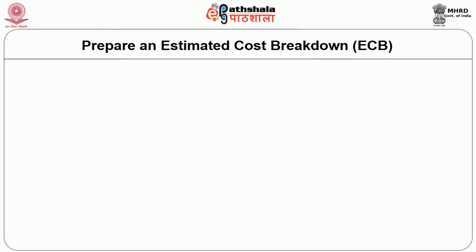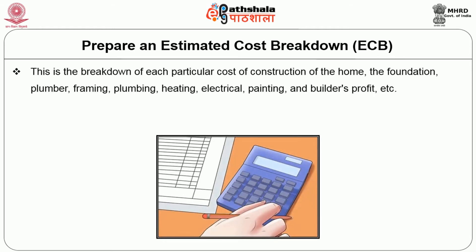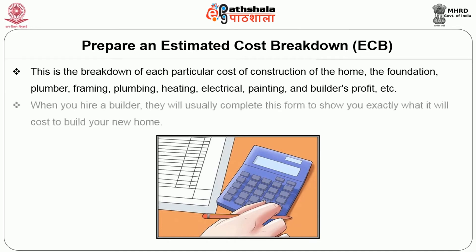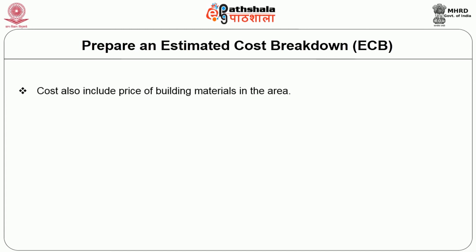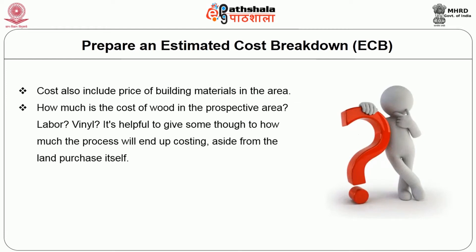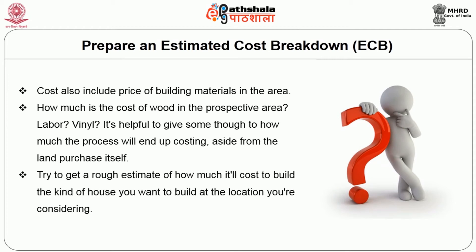Prepare an Estimated Cost Breakdown (ECB). This is the breakdown of each particular cost of construction — foundation, plumbing, framing, heating, electrical, painting, and builder's profit. When you hire a builder, they will usually complete this form to show you exactly what it will cost to build your new house. Costs also include the price of building materials in the area. Try to get a rough estimate of how much it will cost to build the kind of house you want at your chosen location.